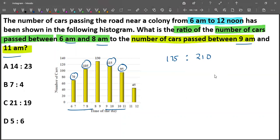Let's cancel the fives. 175 is 5 times 35, 210 is 5 times 42. So 35 to 42. Then 35 is 7 times 5, 42 is 7 times 6. So 5 to 6 is our answer.